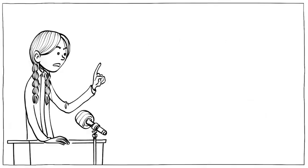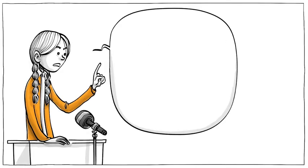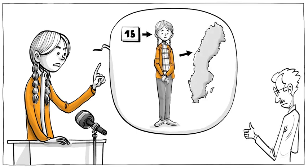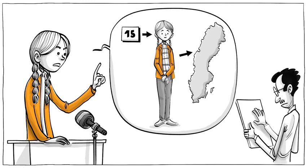But when she begins a speech with, my name is Greta Thunberg, I am 15 years old, I am from Sweden, then that's a factual assertion because you can check if all that's correct.